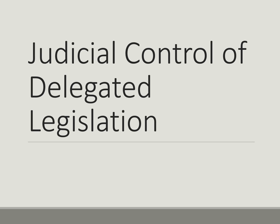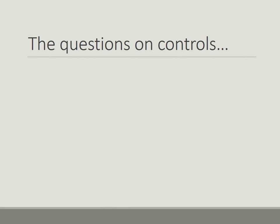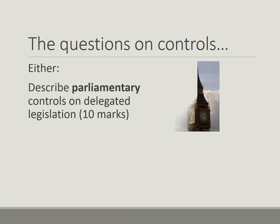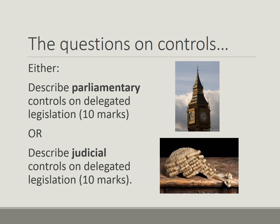Welcome to this revision video on judicial controls of delegated legislation, which is usually the second question on delegated legislation. There are two potential questions on control and they are only one word different, so you need to make sure you read the question carefully and answer about the right type of control. The first question is about how Parliament controls delegated legislation; the other is about how the courts control delegated legislation — since judges are found in the court, this is called judicial control, and that is the focus of this video.